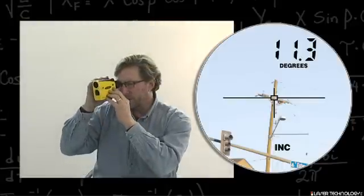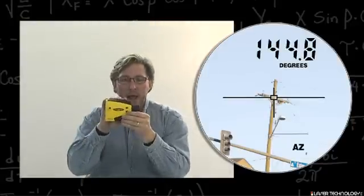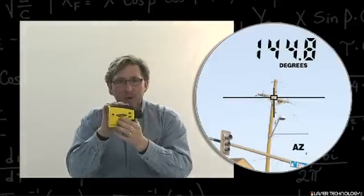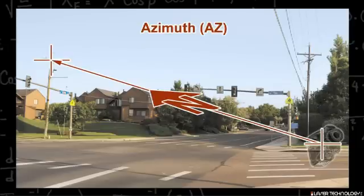Look through the instrument, hit your down arrow, and it will show an azimuth on the TruPulse 360 models. That is actually a compass heading of the direction that the laser was shooting.